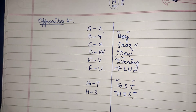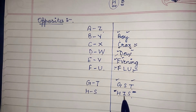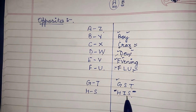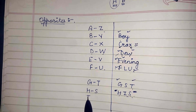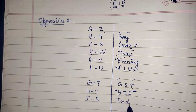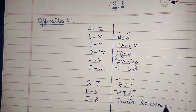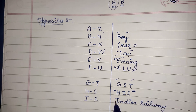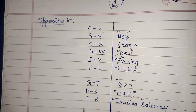H and S — you can remember them with the word 'his', so H and S are opposite to each other. Next, I and R — we can say this is Indian Railway, so I and R are opposite to each other.